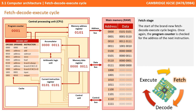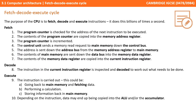What we've looked at here is one complete cycle of fetch, decode, and execute, showing how each of the various registers are used and how information travels between the registers, across the buses, and to and from the CPU and main memory. Here's a summary of everything we've learnt in this video — pause it and take some notes.